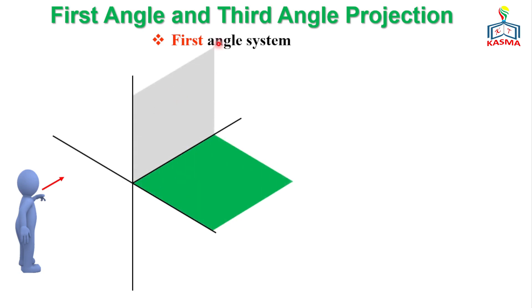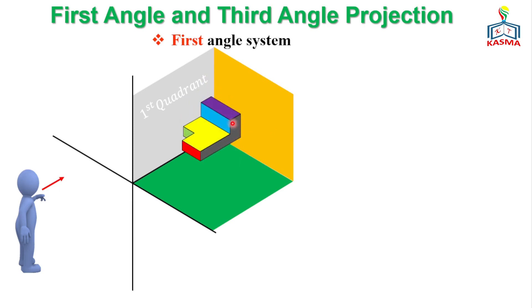First angle projection is implemented on the first quadrant. The object is placed between the observer and the projection plane. For example, if you want to construct the front view of this object, it will be projected on the projection plane — that means the object is between the observer and the projection plane.